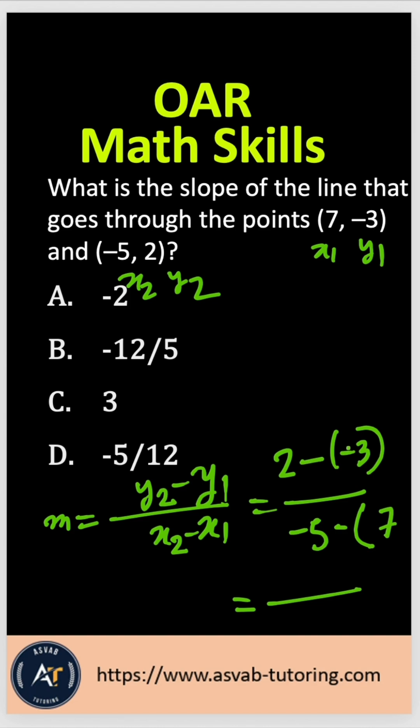So that gives you positive times negative is negative. So 3 plus 2 is 5 and then here you have 7 plus 5 is 12. So that gives you negative 12.